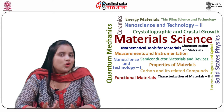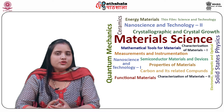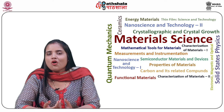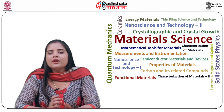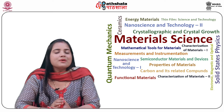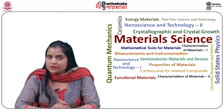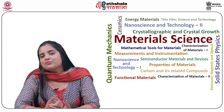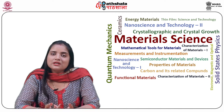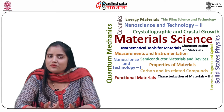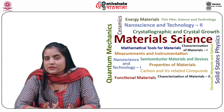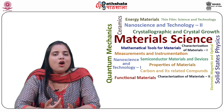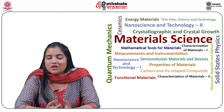Coming on to quantum dots. Quantum dot solar cells are based on the Grätzel cell's DSSC architecture. However, they use low band gap semiconductor quantum dots — for example, cadmium sulfide, cadmium selenide, antimony sulfide, etc. — as light absorbers rather than organic or organometallic dyes.